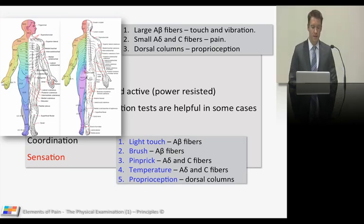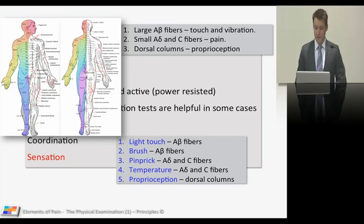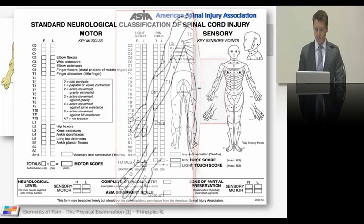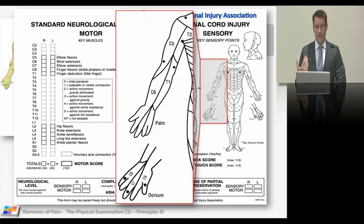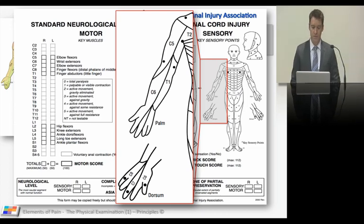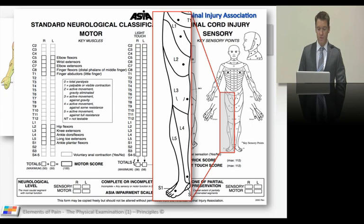We all have pictures of dermatomes in our minds, and the aim is to keep it as simple as possible. I use the American Spinal Injury Association dermatome map — it's really simple, and I advise you to download one from their website. For the upper limb: C4 is the lateral aspect of the clavicle, C5 is the upper outer aspect of the arm, C6 is the lower outer aspect, C7 is the middle finger, C8 is the inner aspect of the palm, T1 is the inner aspect of the lower arm, and T2 is the upper inner aspect of the arm.